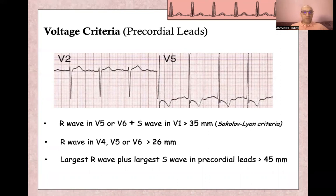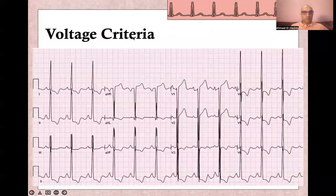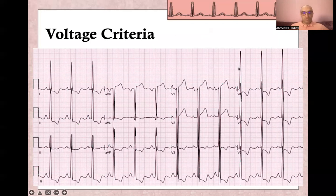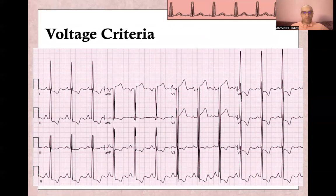Each of these criteria has its own sensitivity and specificity, and meeting more than one criteria is the best approach. Here in aVL more than 11 millimeters, in aVF more than 14 millimeters, and lead I alone is more than 20 millimeters. Note that in lead III it is an R-wave, not an S-wave. In precordial leads, V4, V5, and V6 are of course more than 26 millimeters, and counting V1 plus V5 or V6 will be more than 35 millimeters.